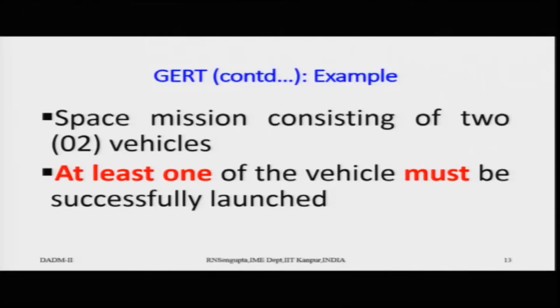Now consider a modified scenario where the space mission still has two vehicles but at least one must be successfully launched. This means success for vehicle one with failure for vehicle two, or failure for vehicle one with success for vehicle two, are both acceptable. So out of the four combinations, three lead to success and only one — both vehicles unsuccessful — leads to failure.